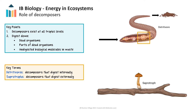Saprotrophs digest externally, like some fungi and bacteria. If you've ever noticed a mushroom growing on a fallen log, the log is dead organic matter, and the mushroom growing there is secreting digestive enzymes onto the surface of the log. The enzymes externally digest the cellulose and other organic molecules, and then the mushroom absorbs those broken-down molecules into its tissues.